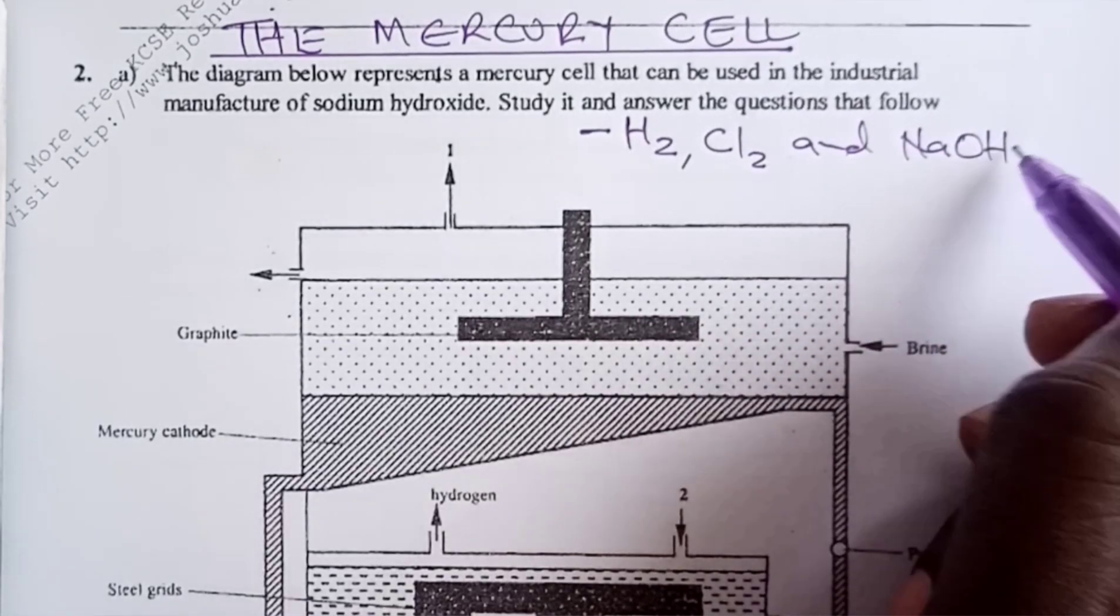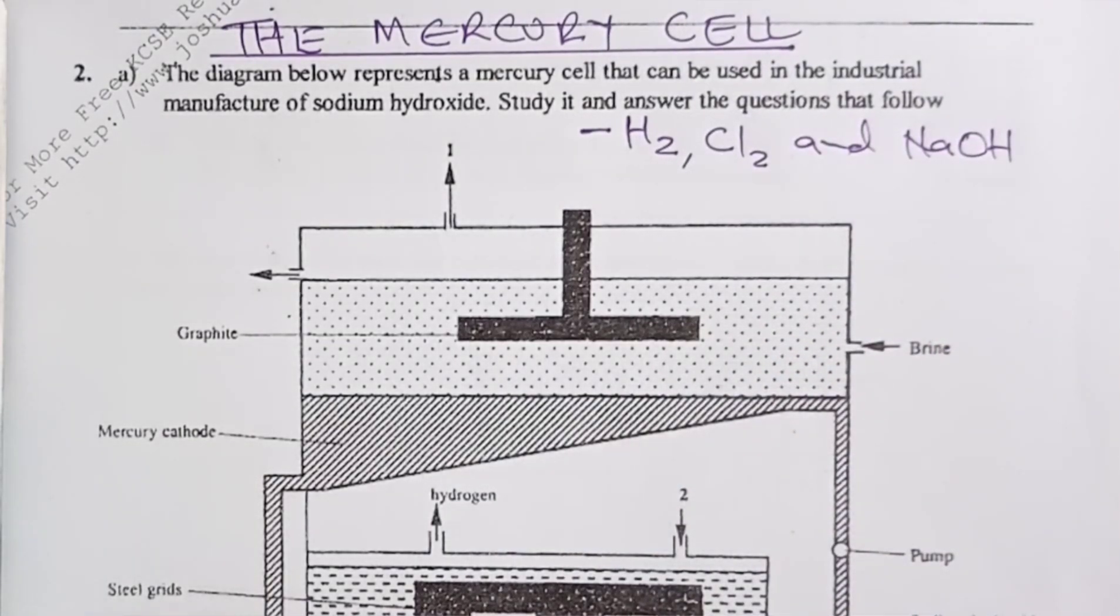This cell is in addition to the other two cells that we learn in form four, that is the diaphragm cell and the membrane cell.